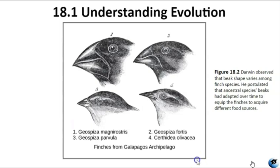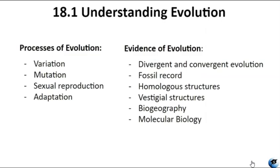When conditions returned to normal, the trends towards smaller bills ceased as larger seeds became available. Natural selection relies on genetic variation within a population, which primarily arises from mutation and sexual reproduction. Mutations introduce new alleles, and their effects on fitness can range from harmful to beneficial or even neutral. Sexual reproduction contributes to genetic diversity by producing unique combinations of alleles in offspring. Adaptation is a heritable trait that enhances an organism's survival and reproduction in its current environment. Examples include a platypus's webbed feet for swimming, a snow leopard's thick fur for cold environments, and a cheetah's speed for catching prey.